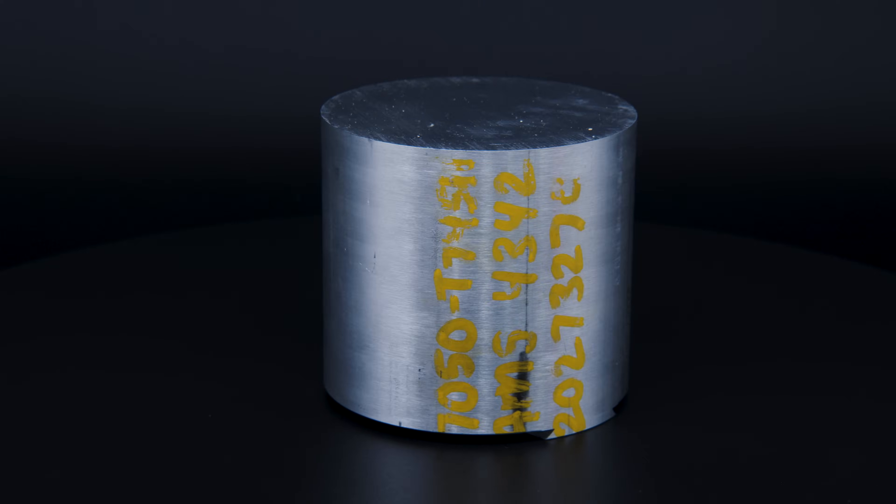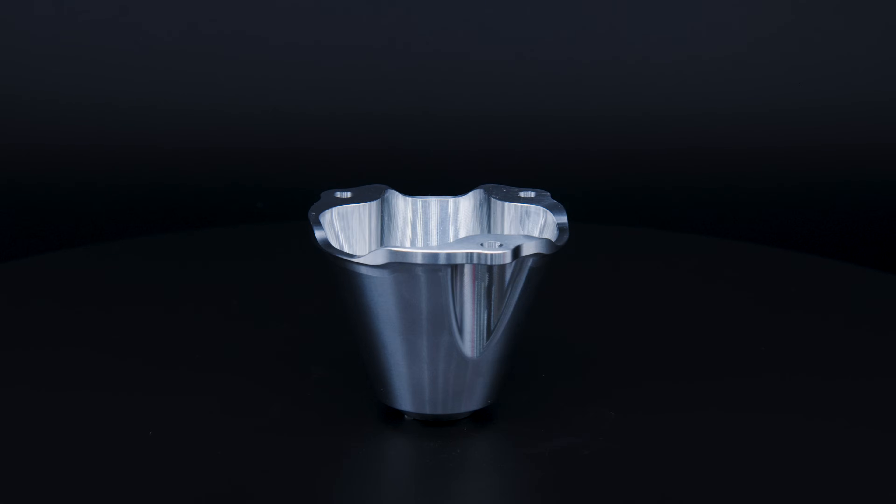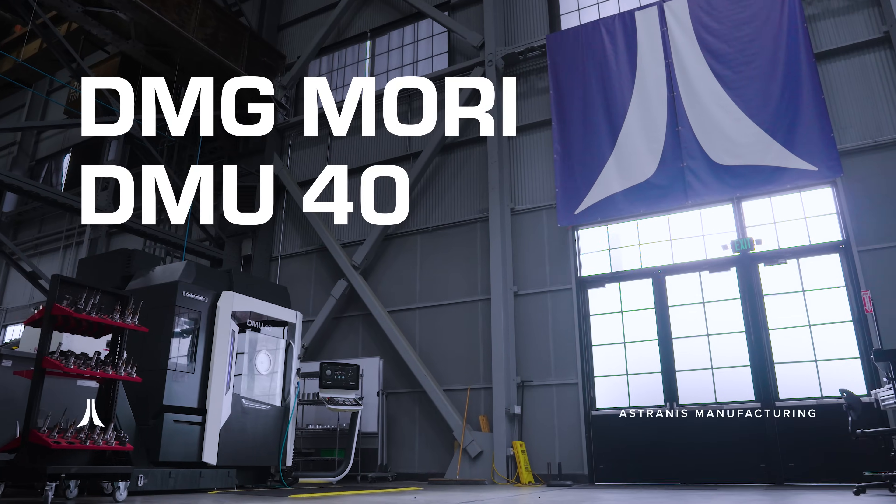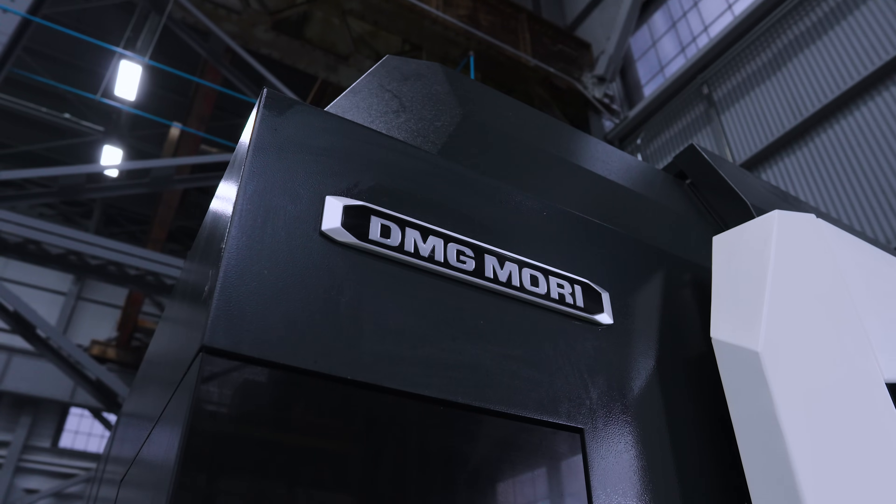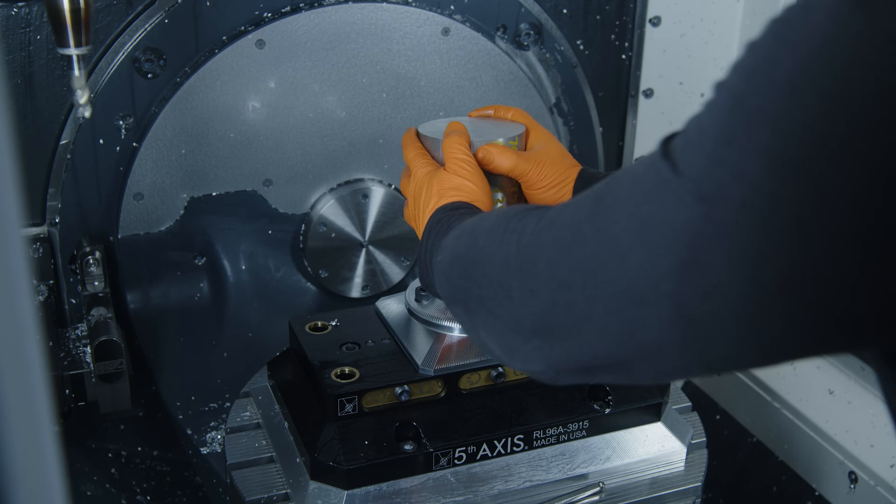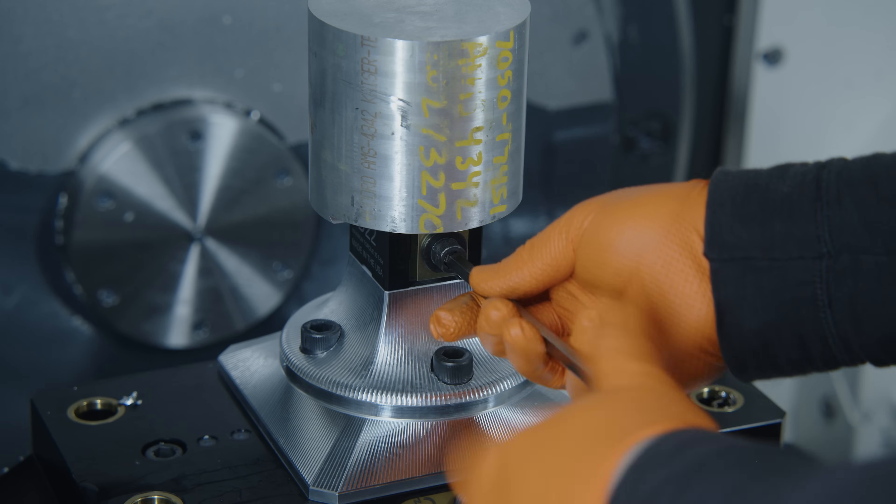Today we're turning a five pound chunk of aluminum into a precision aerospace part all on the DMG Mori DMU40. We start by clamping the stock in a fifth axis dovetail fixture.